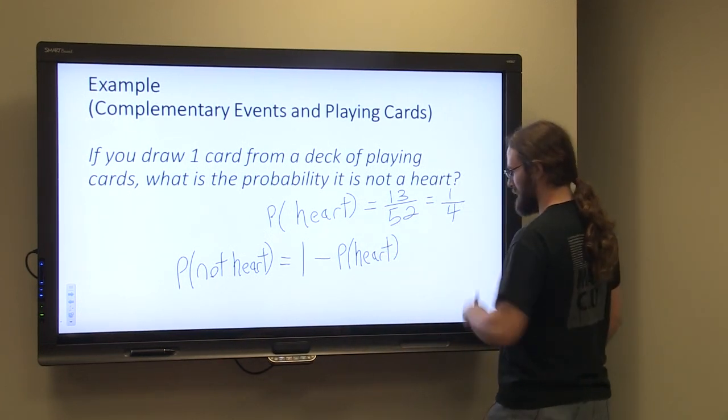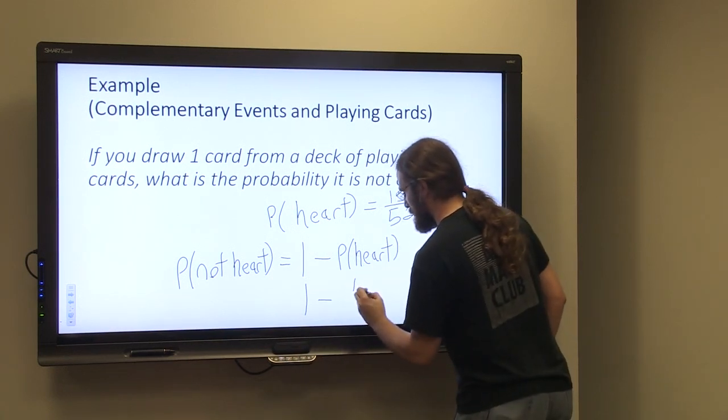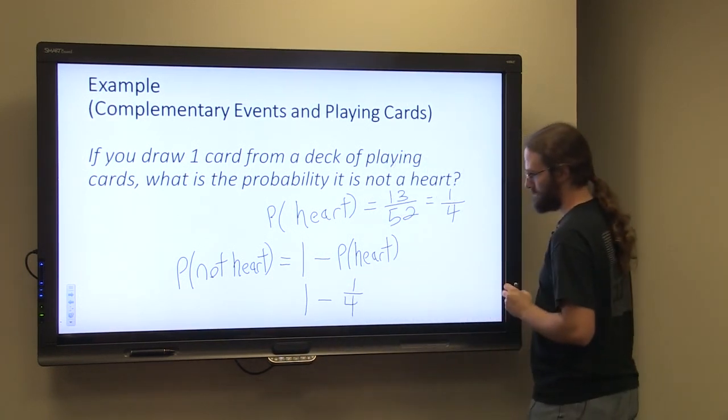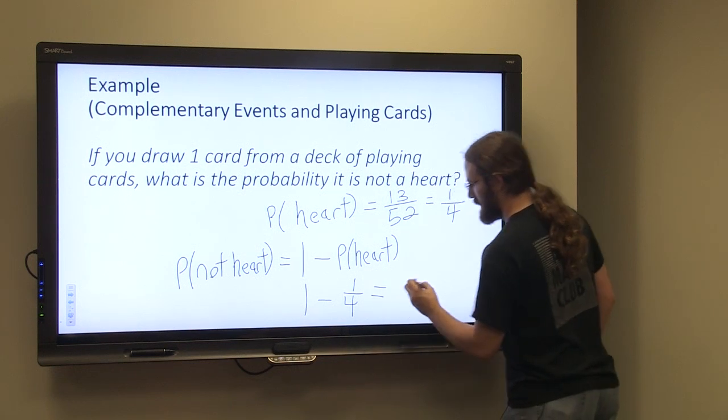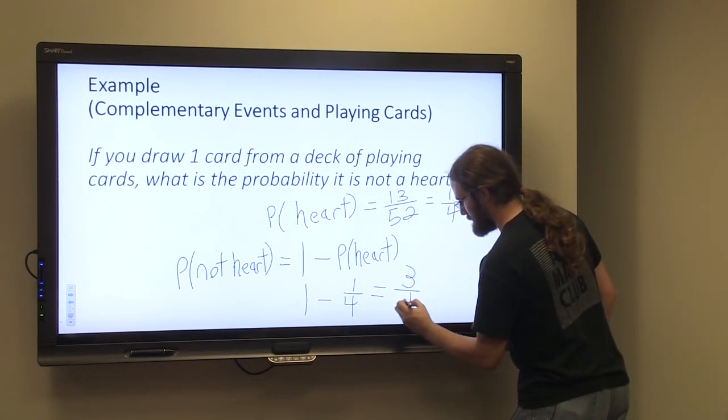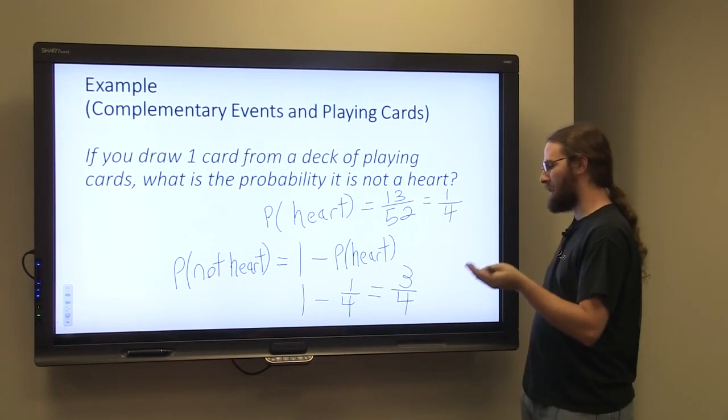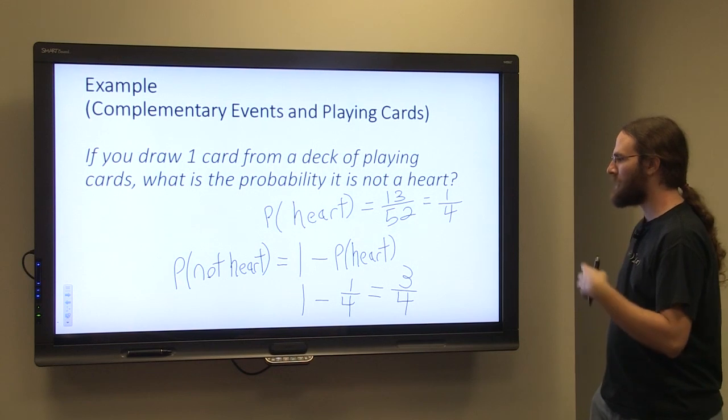So we know the probability of drawing a heart is one out of four. So we're looking at one minus one out of four, which would equal three out of four. So the probability of not drawing a heart would be three out of four.